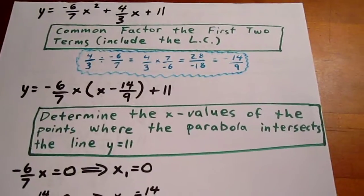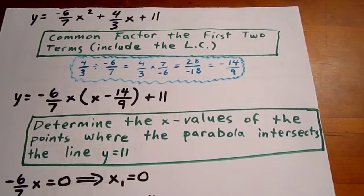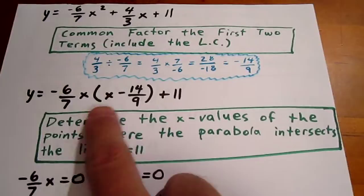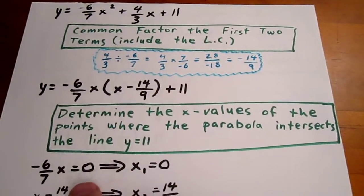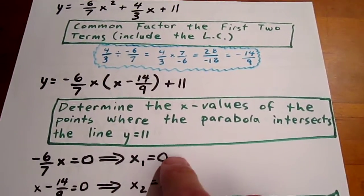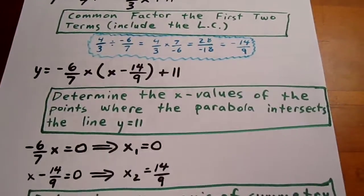We can determine the x values of the points where this parabola intersects the line y equals 11 by focusing on the first part of the expression and setting it equal to 0. That would mean x is 0 or x is 14 over 9.